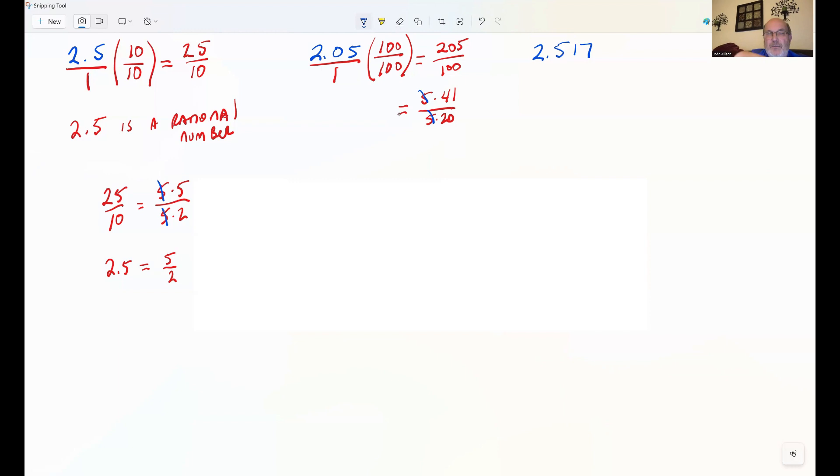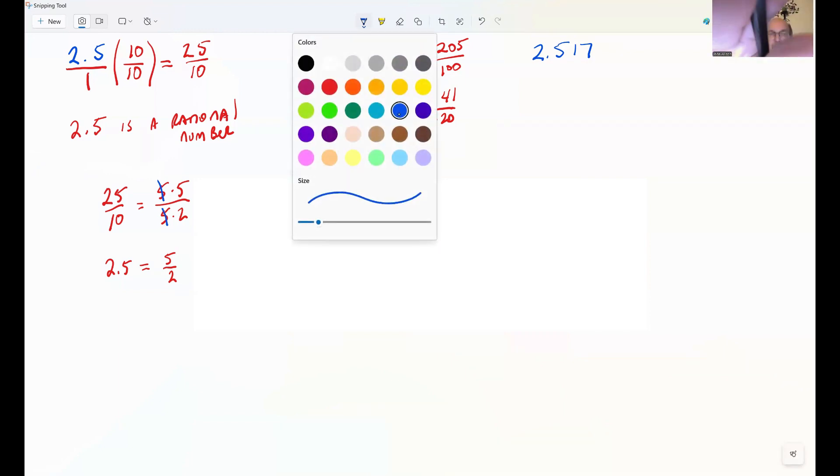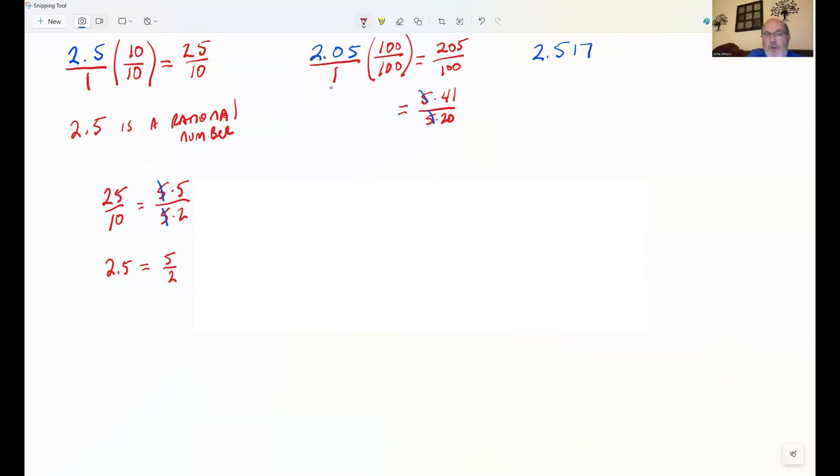So this one tells me that 2.05 is a rational number because it equals 41 over 20. Again, we're going to verify that with a calculator. We're going to do 41 divided by 20, and you're going to see that's equal to 2.05.